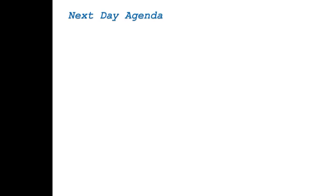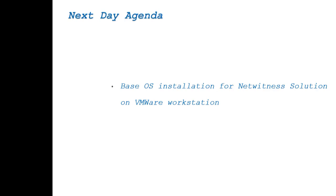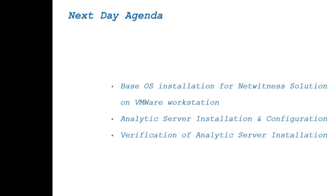In the next session, we will proceed to the lab where we will install the NetWitness solution. First, we will install the base operating system of the NetWitness solution on VMware Workstation. After the base installation, we will install the Analytic Server, perform required configuration such as IP assignment, hostname, and DNS settings. After completing the installation, we will verify whether installation is successful by checking required services, then access the Analytic Server from a browser using the GUI and also via command line.